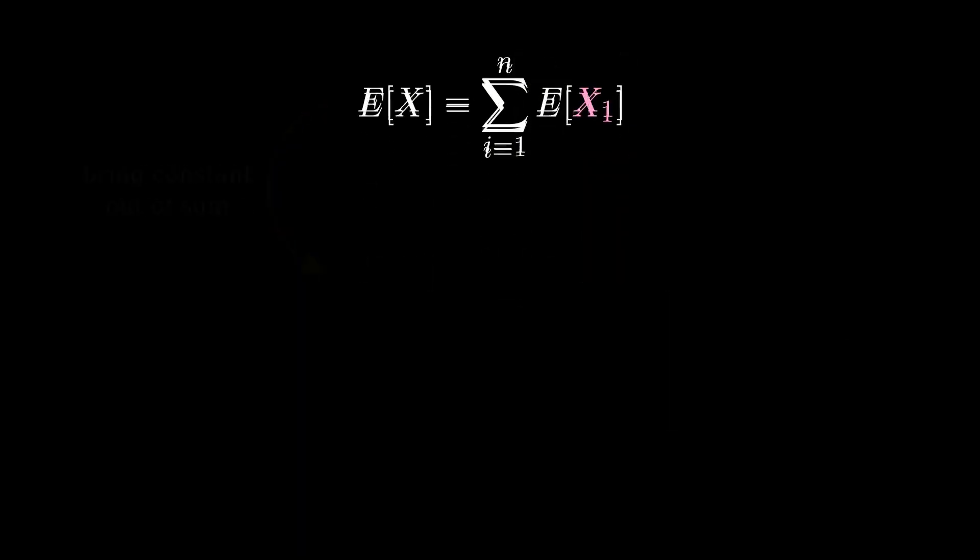That means our formula simplifies to E of X is n times E of X sub 1. And as we said before, E of X sub 1 is just the probability that student 1 gets her own homework back. 1 over n.